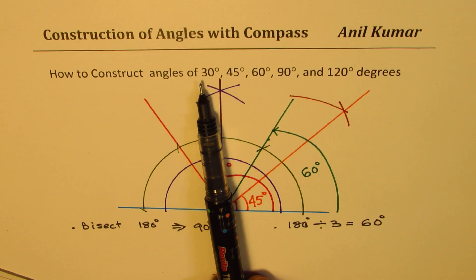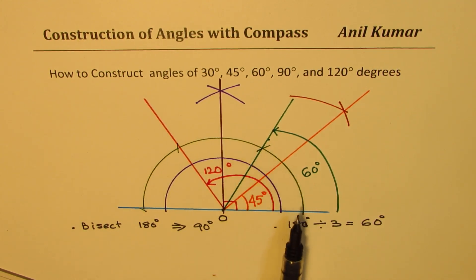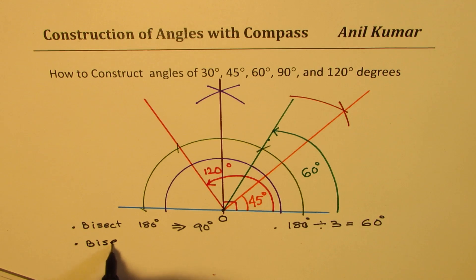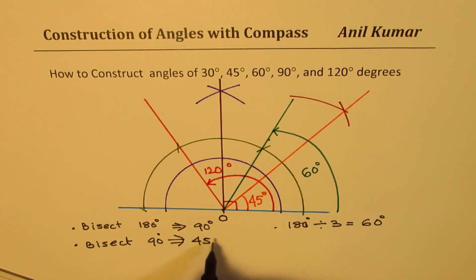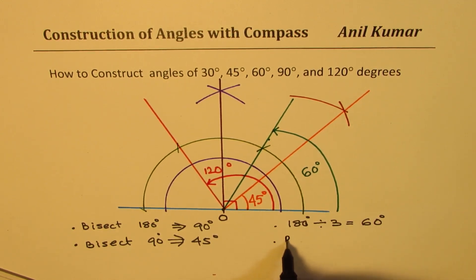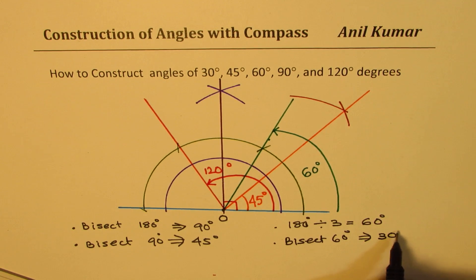To get 30 degrees, we bisect 60 degrees — just as we got 45 by bisecting 90. So the method is: bisect 180 to get 90, bisect 90 to get 45, trisect 180 to get 60, and bisect 60 to get 30 degrees.